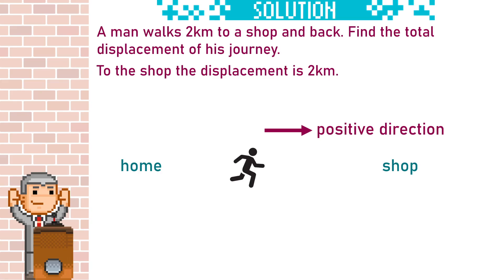To the shop his displacement is two kilometres, but then coming back his displacement is minus two kilometres. Add them together and his total displacement is zero kilometres, which makes sense because he started at home and he ended at home, so the total displacement is zero.